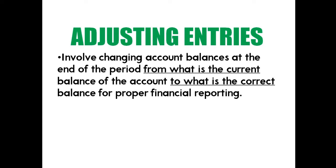Adjusting entries involve changing account balances at the end of the period from what is the current balance to what is the correct balance for proper financial reporting. For example, prepaid rent is an advanced payment of rent. If you paid 100,000 prepaid rent in January covering 24 months, by December the balance is no longer 24 months worth — 12 months have passed, so 12 months became rent expense already. That is what adjusting entries address.